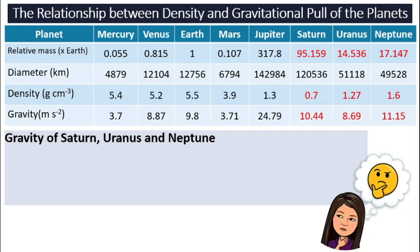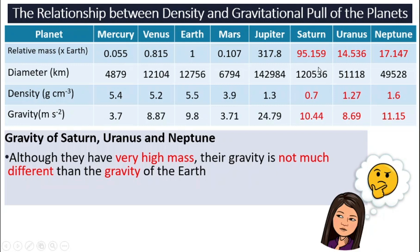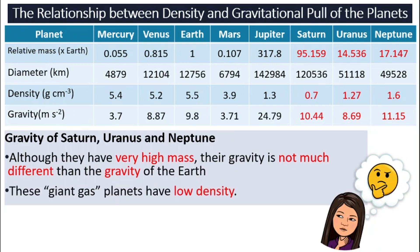Next, Saturn, Uranus, and Neptune. Their masses are very high compared to Earth — 95 for Saturn, around 14 for Uranus, and around 17 for Neptune. However, their gravitational pull is not that much higher than Earth's, and Uranus even has a slightly lower gravitational pull. Why is that? It is because of their density. They have very low density since they are covered by gas — these are giant gas planets. Earth has a density of 5.5, while Saturn, Uranus, and Neptune have much, much lower density. That is why their gravitational pull is actually not very different from Earth's.